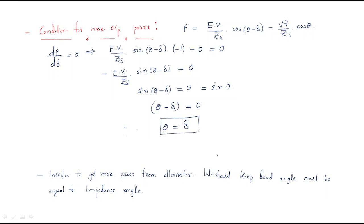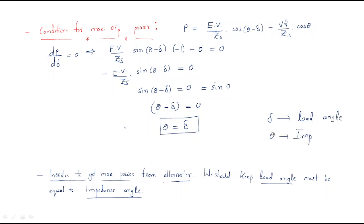Finally we conclude that θ equals δ. So in order to get the maximum power from the alternator, the load angle δ must be equal to the impedance angle θ. When δ equals θ, maximum power is transferred from the alternator to the load.